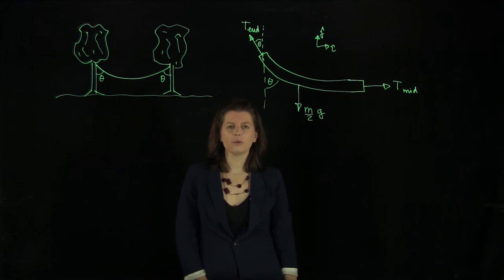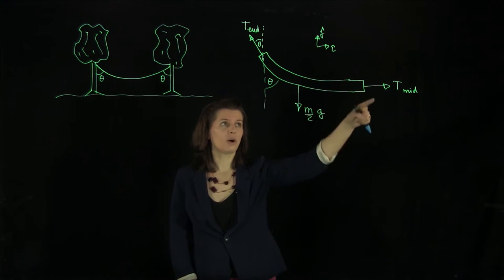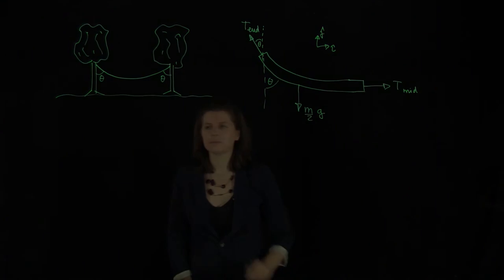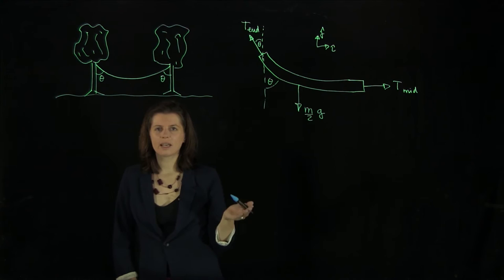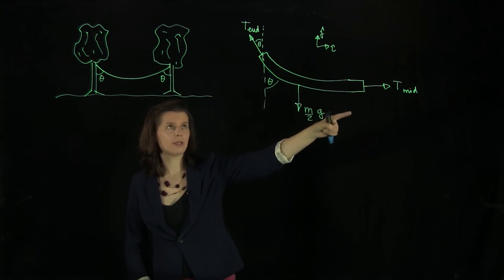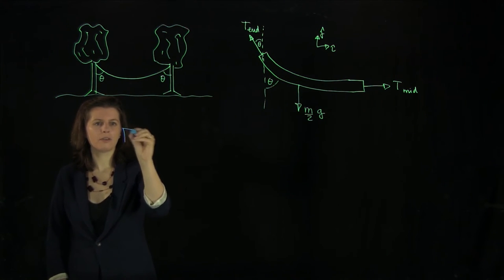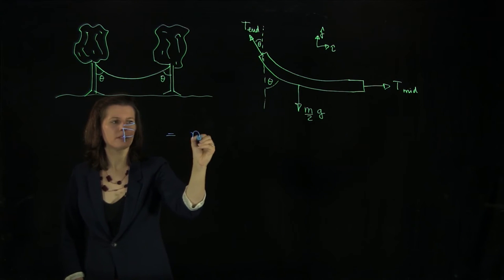So all we need to do is apply Newton's second law and do an f equals ma analysis to figure out what these tensions are. So let's apply Newton's second law to figure out what the tensions are at the midpoint and at the end over there. So we have f equals ma.